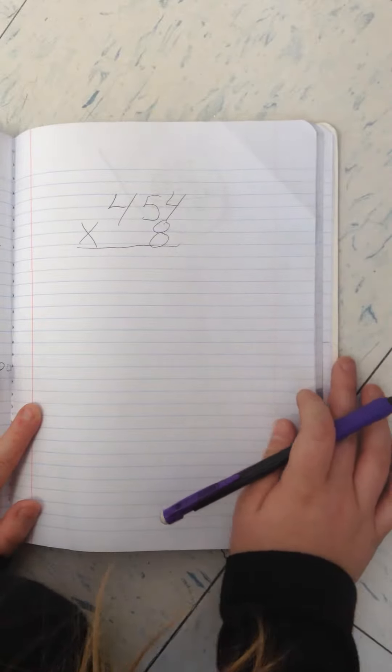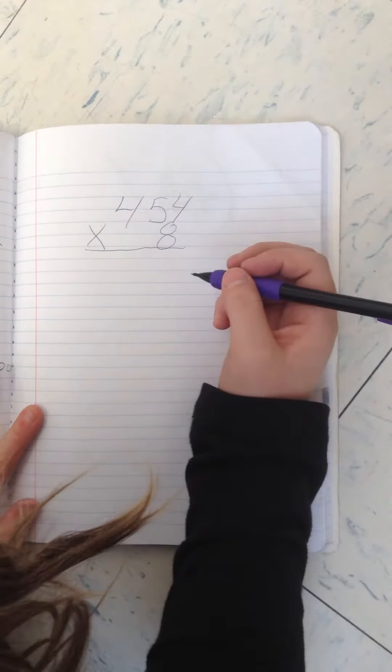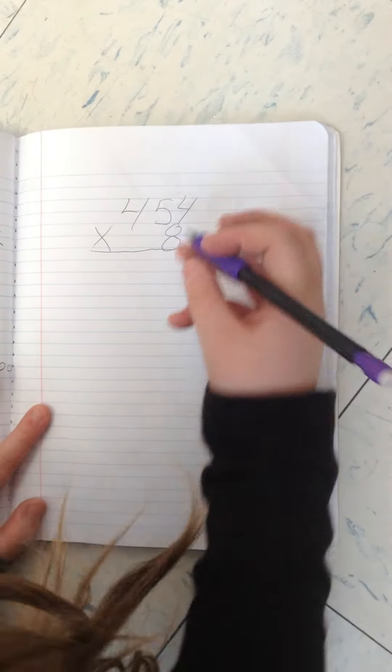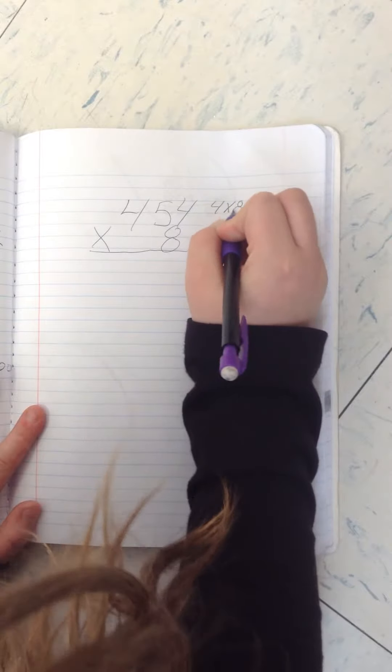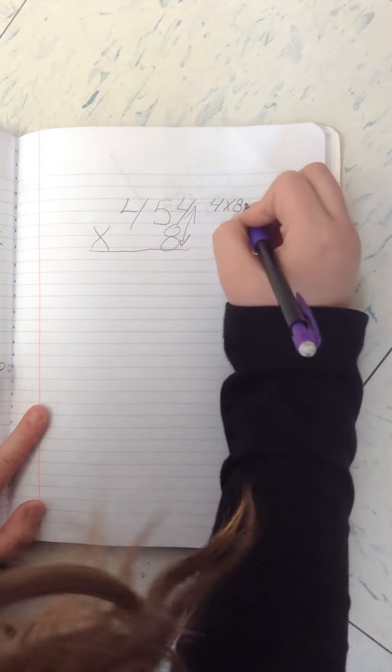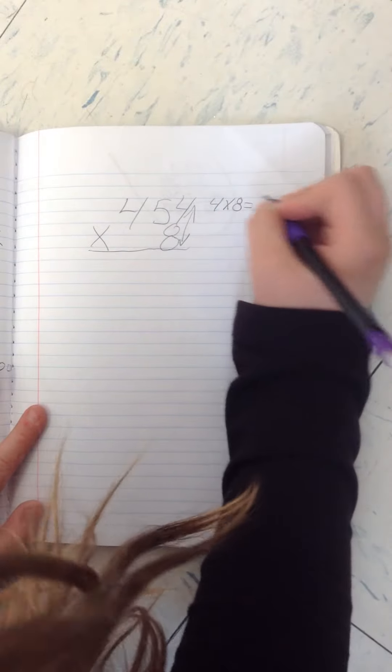Then we have to multiply certain numbers with other numbers. Okay, so first you multiply 4 times 8, which are these two numbers, and that equals 32.